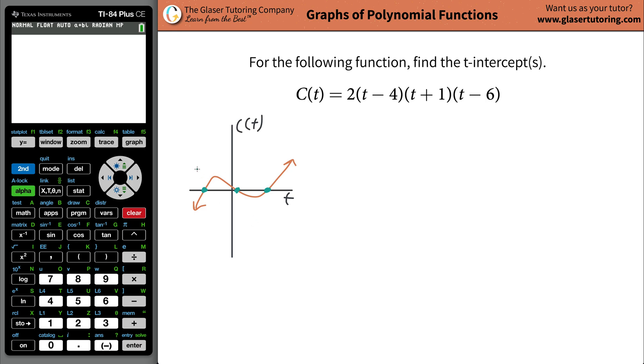Now it turns out that we know something special about all those points. We actually know something about each one of these three points. Remember every point on a graph has two dimensions to it, it could always be described with two values. An x and a y value or in this case a t and a C(t) value.